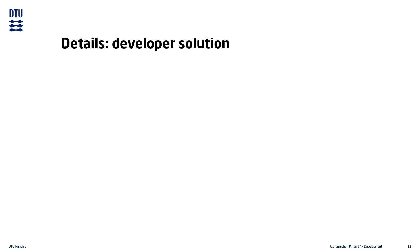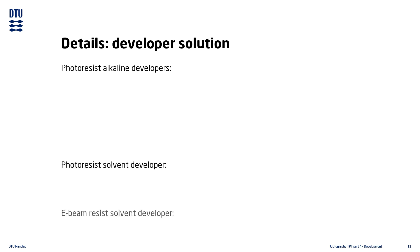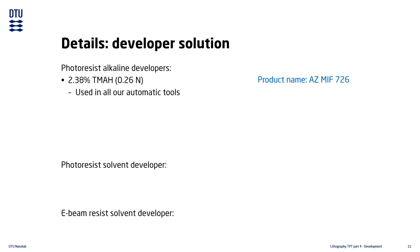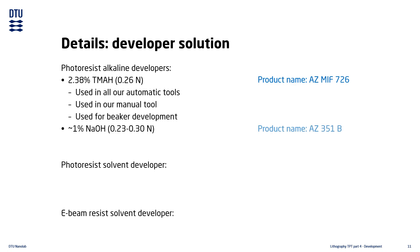At DTU Nanolab we have three standard developer solutions available: alkaline developers for most photoresists, solvent developer for a few photoresists, and solvent developer for e-beam resists. We have two aqueous alkaline developers. The most used is TMAH, which is used in our automatic and manual developer tools, as well as for manual beaker development. The second alkaline developer is sodium hydroxide, but this can only be used for manual beaker development.